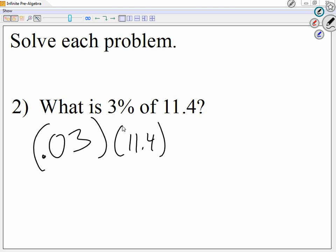So .03 times 11.4. According to the calculator, I get .342. I look at the second decimal number, because it's small. If 4 or less is small, then I'm going to ignore these, and I'm just going to call this 0.3.